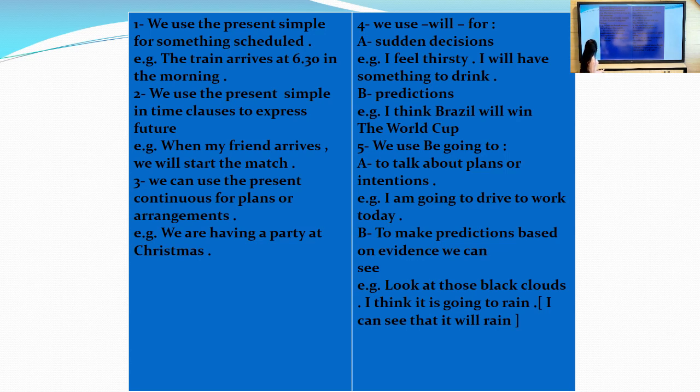The second one: we use the present simple in time clauses to express future. For example, when my friend arrives, this is a time clause. We have when plus subject plus verb one. When my friend arrives, we will start the match. That means my friend doesn't arrive yet or hasn't arrived yet. When he arrives, I will start the match.